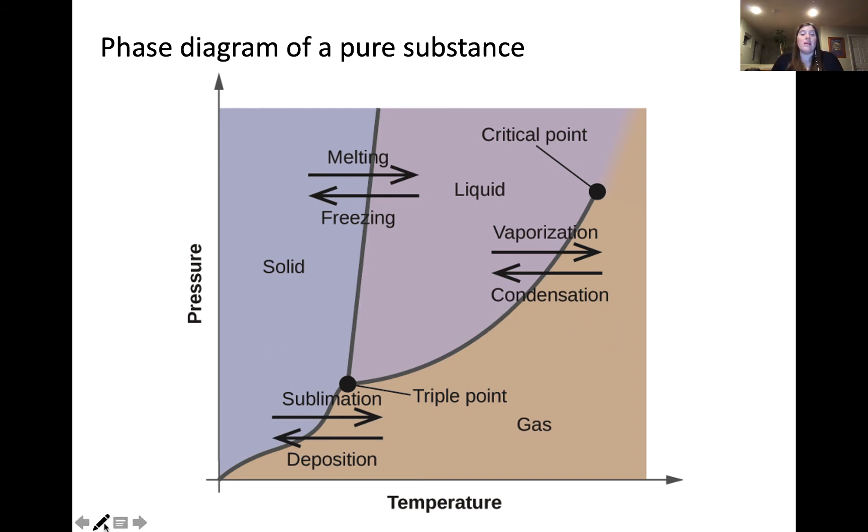So here are the key regions of the phase diagram that you need to know. The first are these three regions of phase stability, the solid, the liquid, and the gas phase. These are the regions of pressure and temperature where that phase is most stable.